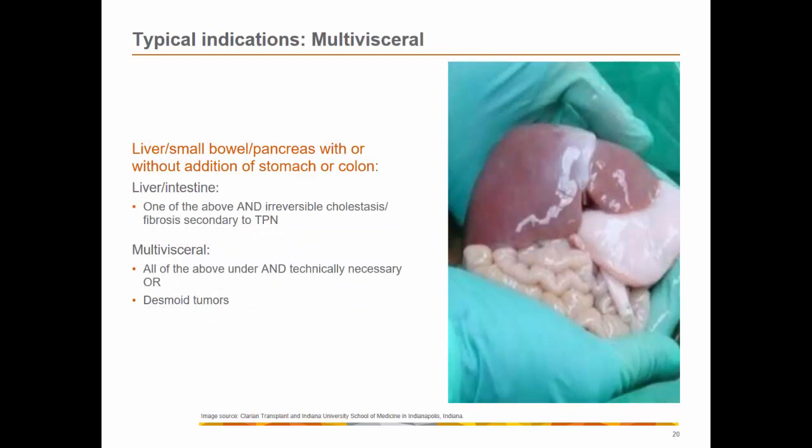Complications of intestine transplantation: weekly endoscopy is indicated to check for rejection, as about 30 to 50% of recipients have one or more bouts of rejection in the first year. Symptoms include diarrhea, abdominal cramping, and fever. Endoscopic evaluation may show erythematous, friable mucosa with ulcerations. Biopsy can be performed, and treatment for acute rejection involves high-dose corticosteroids and antithymocyte globulin, or both. Multivisceral transplantation can include liver, small bowel, and pancreas, with or without the stomach or colon.